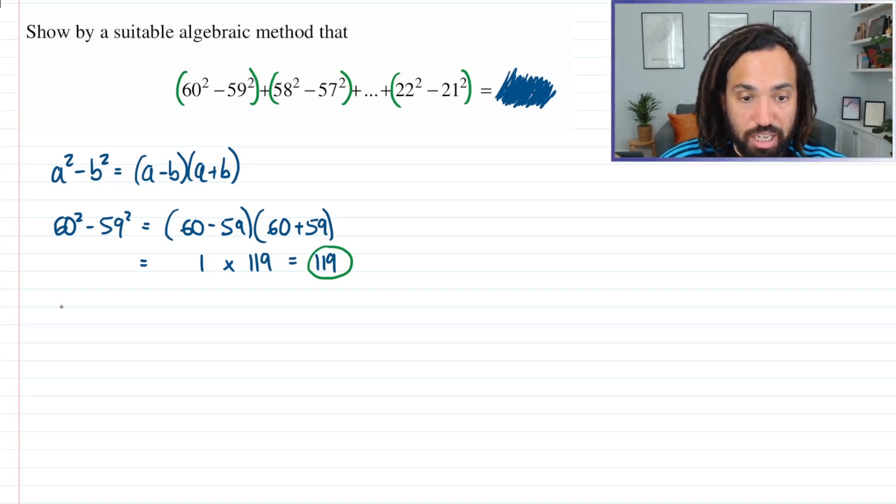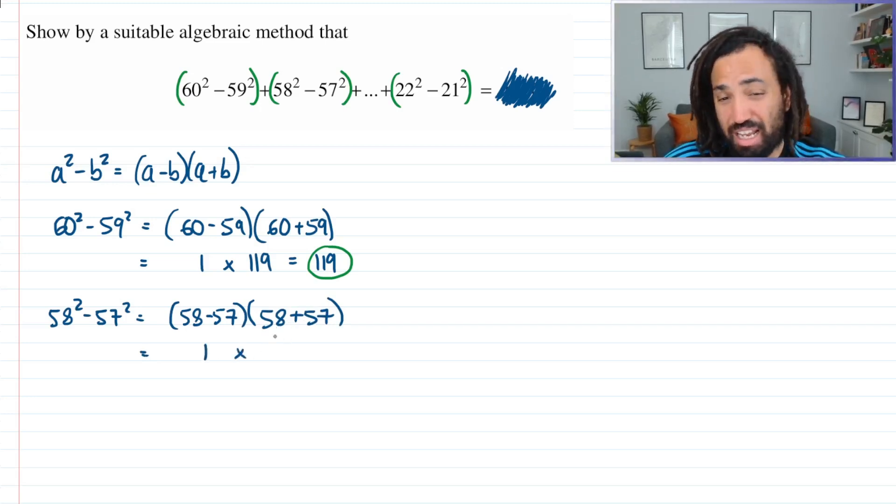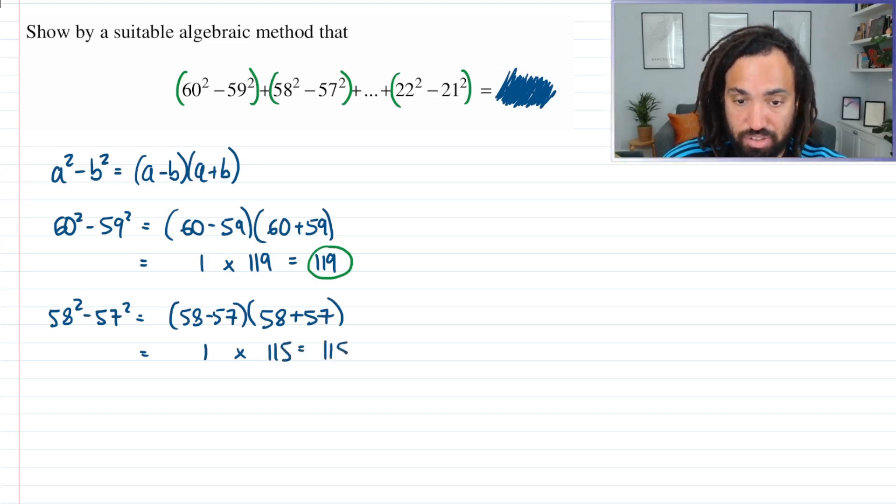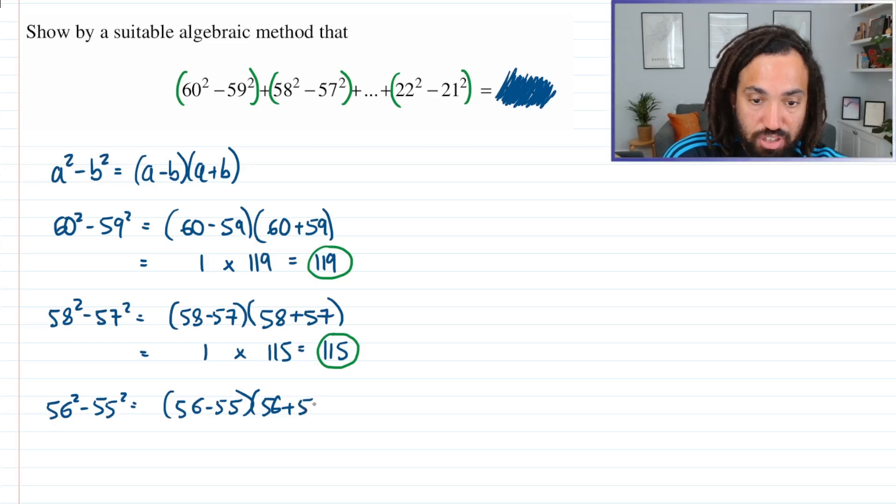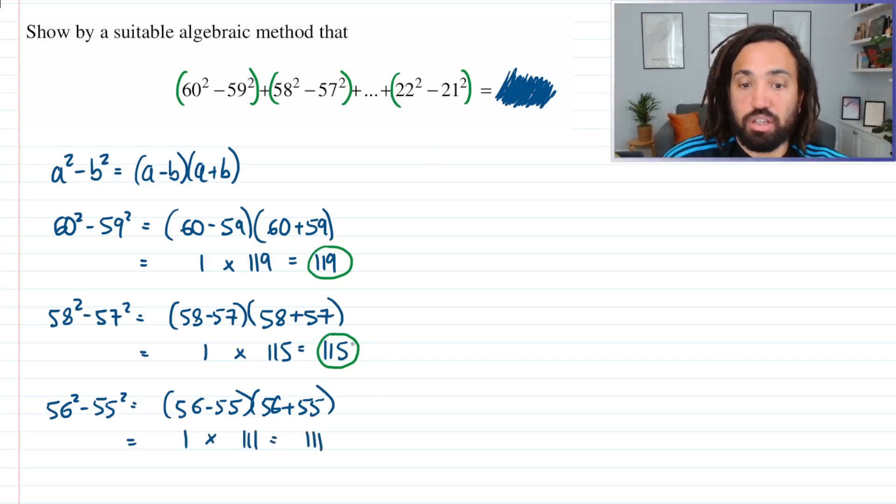Well let's check what the next one is going to be. So 58² - 57² is going to be (58 - 57)(58 + 57), which is going to give us 1 × 115, which is 115. And then it's always good just to do one more just to double check that this pattern is going to hold. So 56² - 55² gives us (56 - 55)(56 + 55), that's going to give us 1 × 111, which is 111.